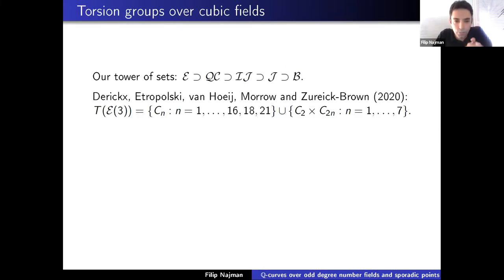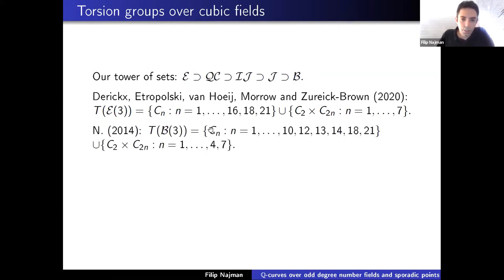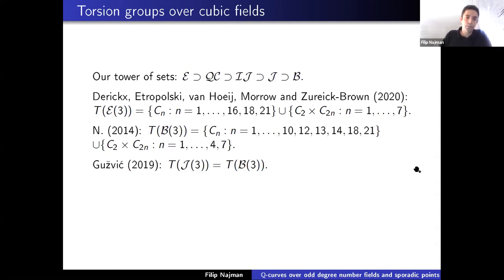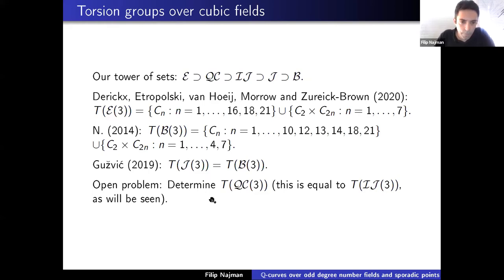A few words about cubic fields. A very recent paper of Derickson, Morrow, and Brown proved what the torsion groups over cubic fields are — this is the largest degree where we know this completely. For base changes of elliptic curves, Guzic proved results about T_J(3), and in this case they are the same as T_J(3). An open problem is: what are the possible torsion groups of Q-curves over odd-degree number fields? As you will see, this equals T(IJ)(3).